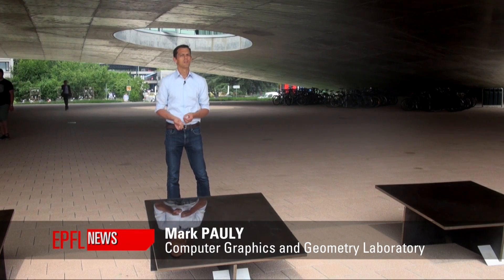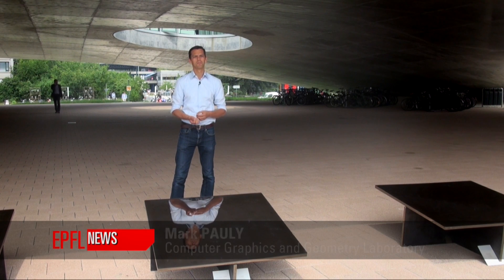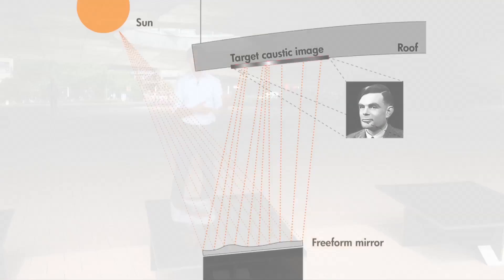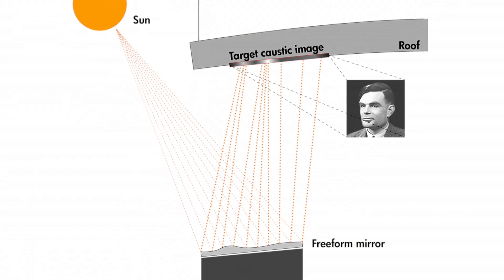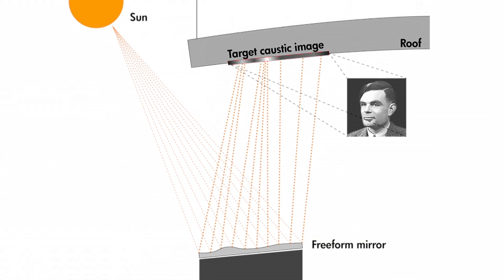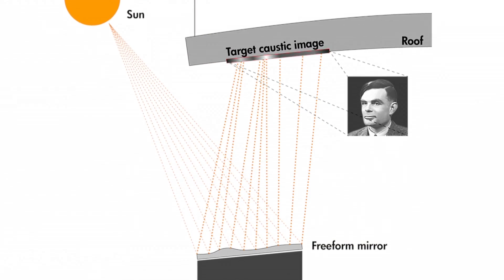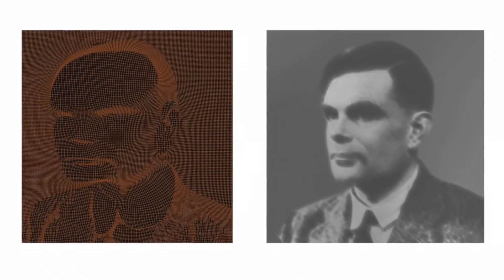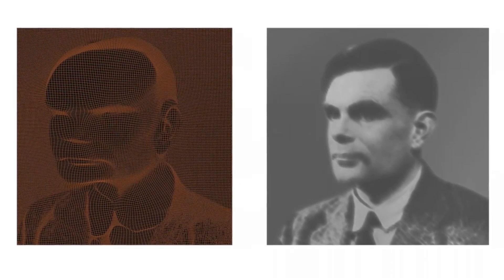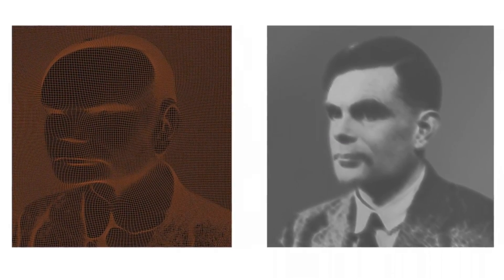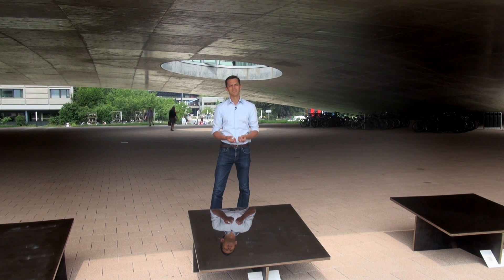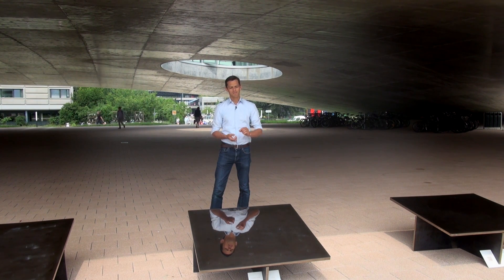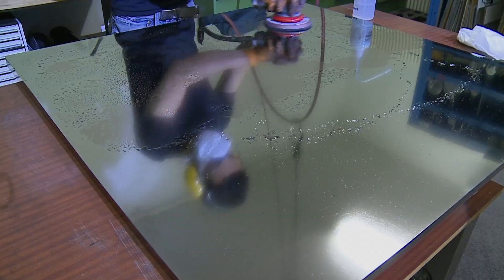We had developed sophisticated algorithms to simulate how sunlight reflects off curved surfaces, and once we've calculated the surfaces of these pieces, we use digital fabrication technology — advanced numerically controlled milling machines that fabricate these plates at very high precision.